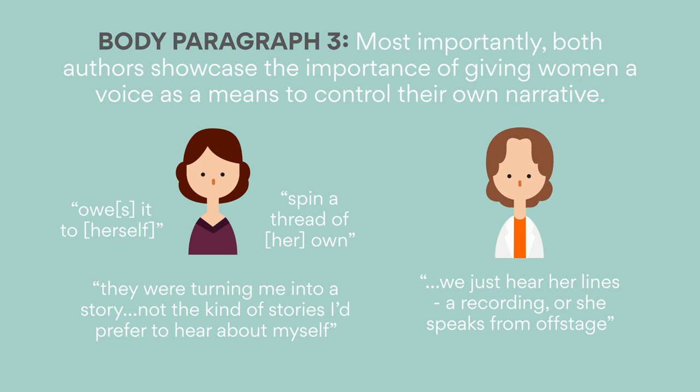The stage direction — the forward slash — shows how the men of past and present talk over her, reducing her opinion and overriding her speech with their own self-aggrandizement. Although Ziegler withholds Rosalind from a complete narrative, both Atwood and Ziegler show in their own way how it is important for women to have a voice so that they can share their own stories in their own way.